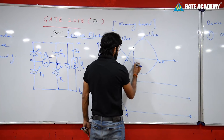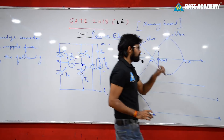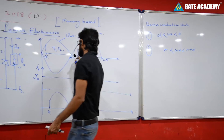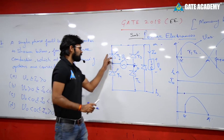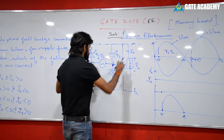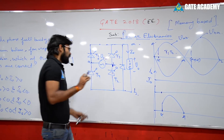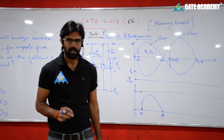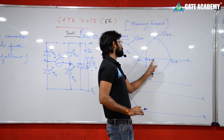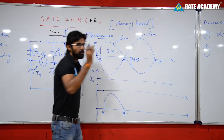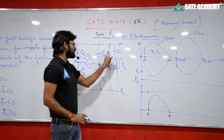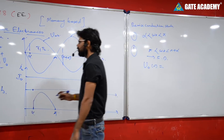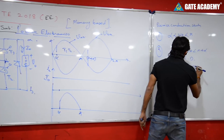The next firing is at π plus alpha. From π to π+alpha, the freewheeling diode conducts. When the freewheeling diode conducts, the output is short-circuited and the output voltage is zero.